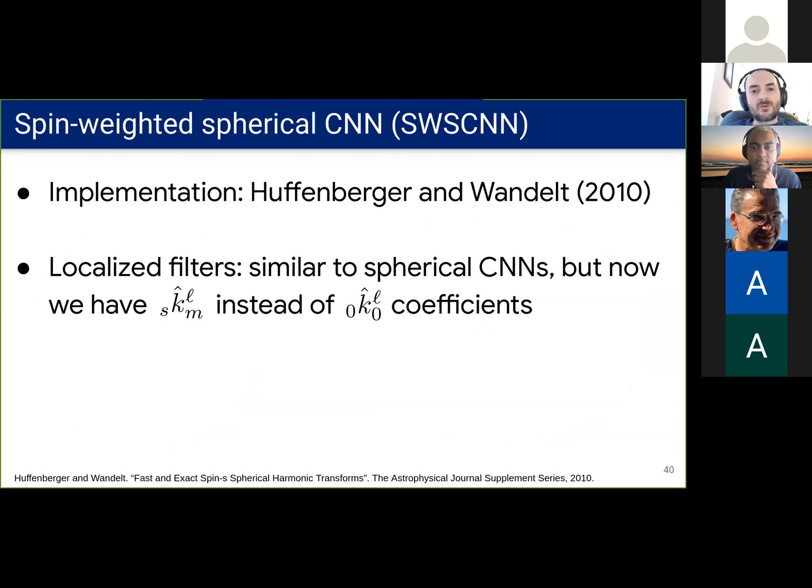And we follow the same idea to localize the filters by interpolating the spectrum as in our previous spherical CNNs. But there we only had spin zero and order zero components, and now we can have any spin and order. So we have more coefficients.